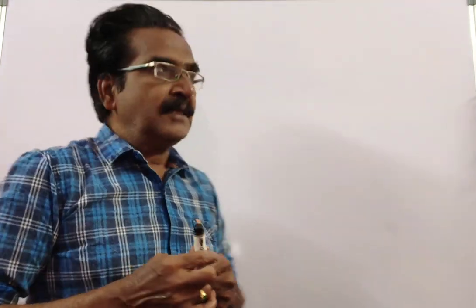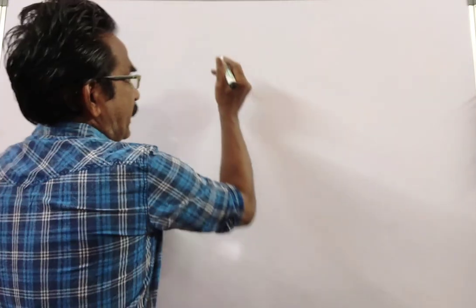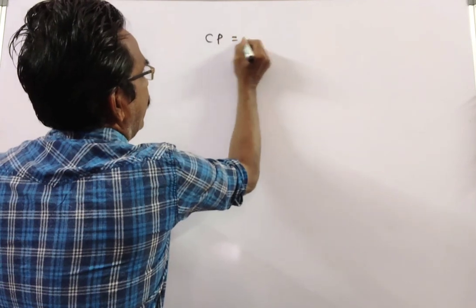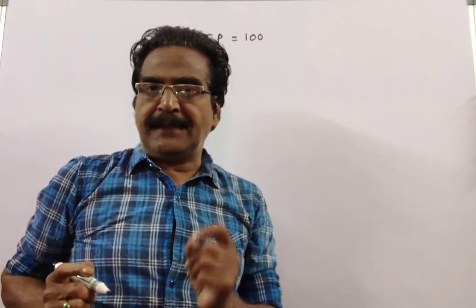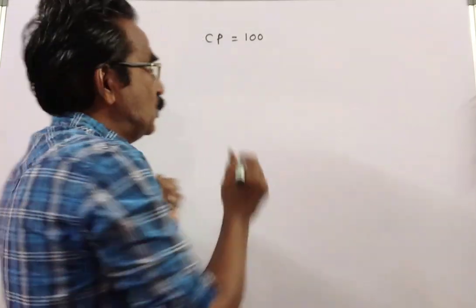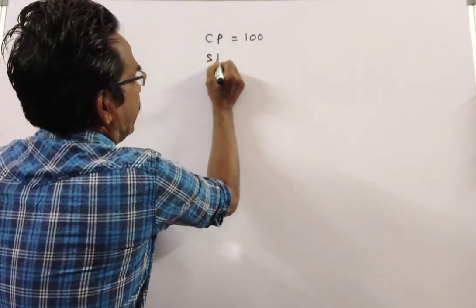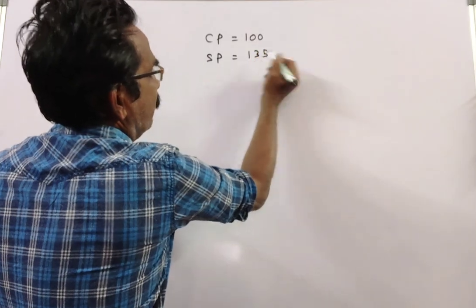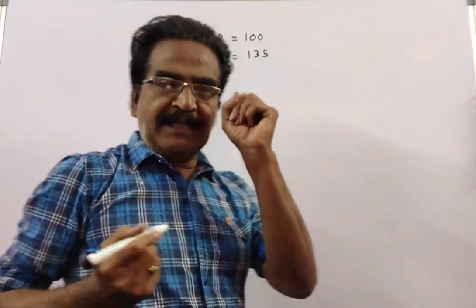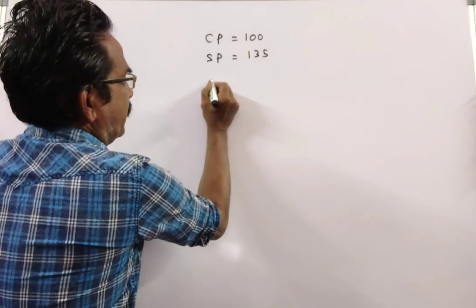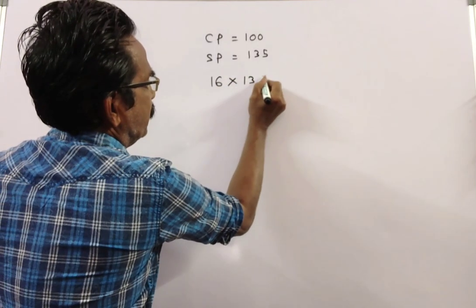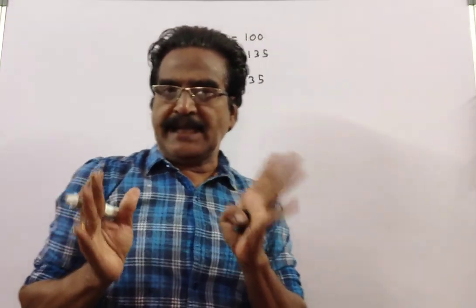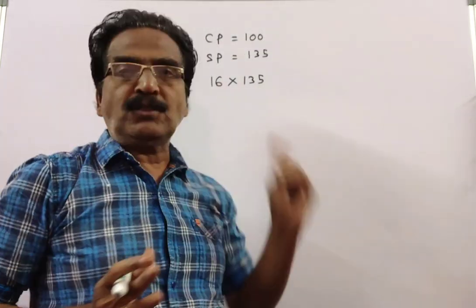Hi friends, good morning. Please look at the next problem in profit and loss. The problem is given in the description box. For instance, say the cost price of each article is 100. The shopkeeper gets a profit of 35 percent, so the sold price of each article is 135 rupees. The sold price of 16 articles is 16 into 135 — he has to realize this amount to get a profit of 35 percent.